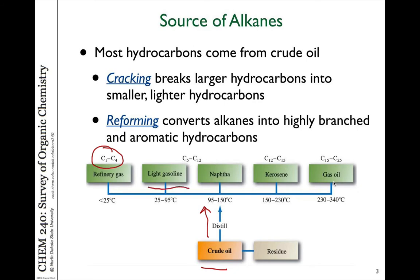Light gasolines and naphtha are hydrocarbons between 5 to 12 carbons in their chains and have various boiling points. This is what we utilize for fuel in our automobiles, mostly for gasoline. The term octane actually refers to the energy of gasoline, and has reference directly to the energy provided by an octane molecule, which is a carbon alkane of 8 carbons.